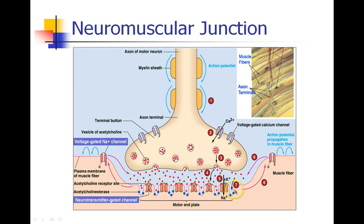This action potential propagates along the length of the muscle fiber. On a microscope image you can see an actual muscle cell, and these tiny little threads are axon terminals — pieces of nerve coming down to innervate the motor end plate and the muscle fiber.